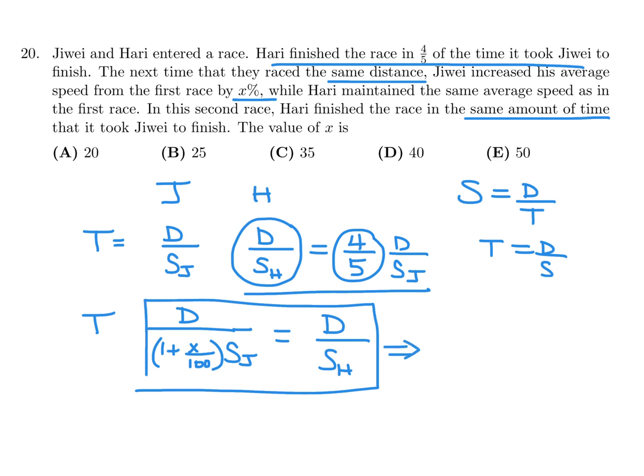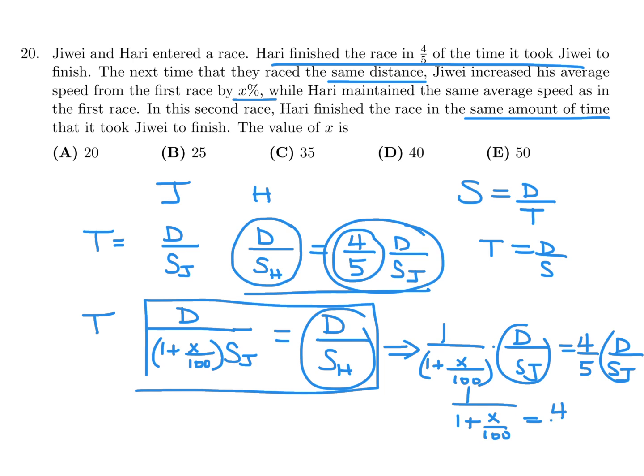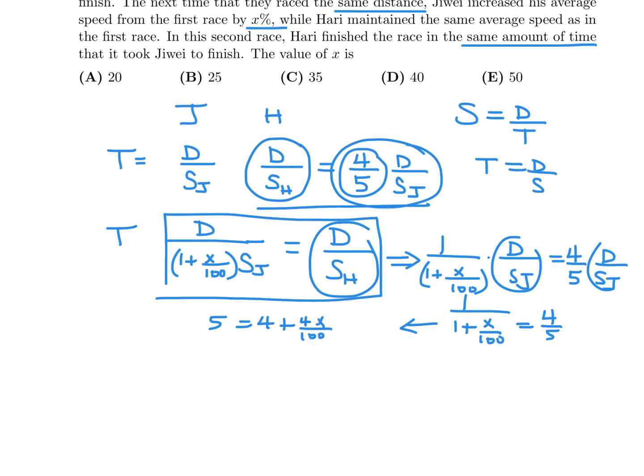So what that tells me is that 1 over (1 plus X over 100) times D over SJ is equal to D over SH. But D over SH, this guy, is this. So 4 over 5 times D over SJ. Well, the D over SJ is canceled from both sides, so you're just left with 1 over (1 plus X over 100) equals 4 over 5. Cross multiply, and we'll get 5 equals 4 plus 4X over 100. And therefore, 1 equals 4X over 100. Therefore, 100 equals 4X. And therefore, X equals 25. 25 is the answer, and really what they're referring to is a percentage, and that would be choice B.